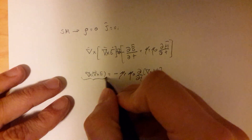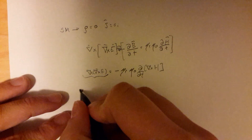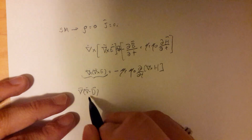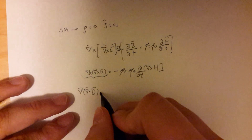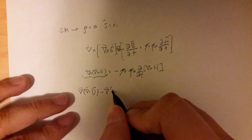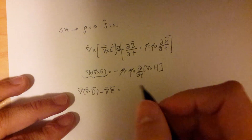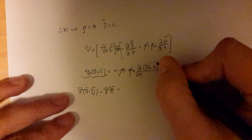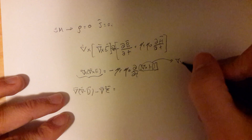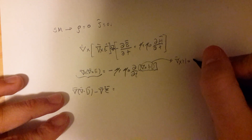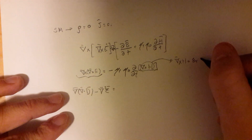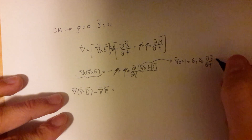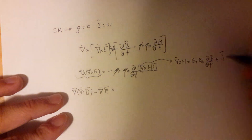We can write the left side of the equation as the gradient of the divergence of D minus the Laplacian of E. For the right side, we recall another Maxwell's equation: the curl of H equals epsilon_R epsilon_0 times the time derivative of E plus the current density J, which is zero.